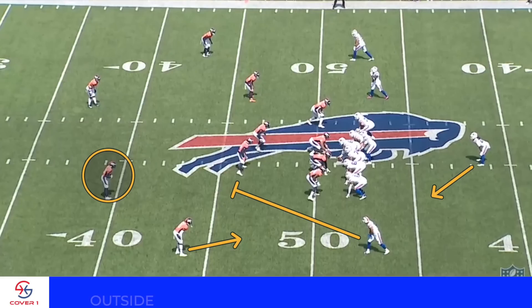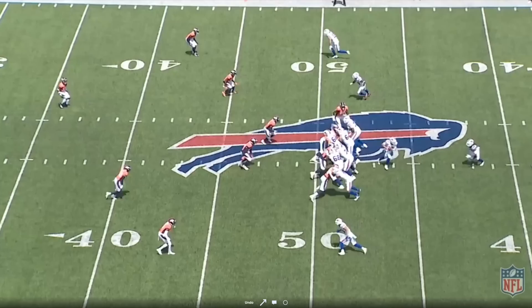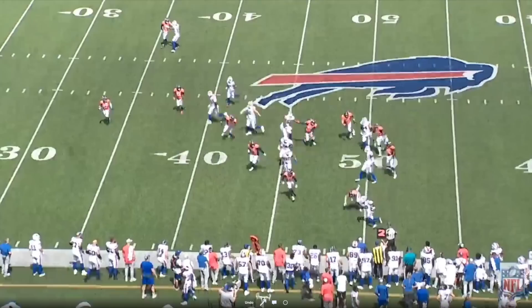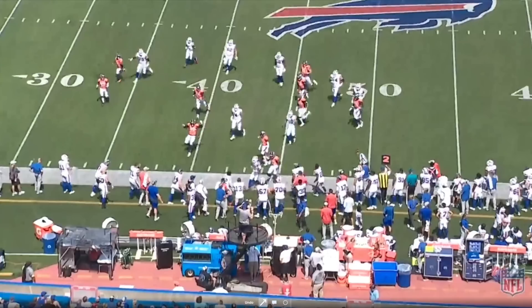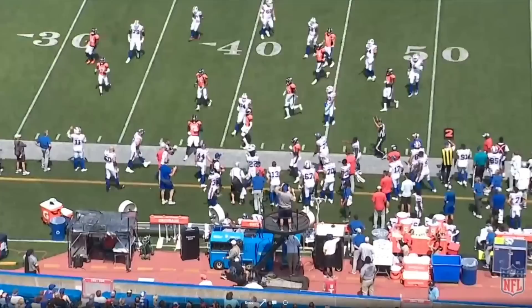Same drive, same concept — outside zone to the left of the formation. You're going to get a push crack from Shakir on the safety. This puts James Cook one-on-one with a corner, and that's a win most times for the offense — that's what coordinators want to see, a running back versus a cornerback with the running back winning. Cook wins for six yards.